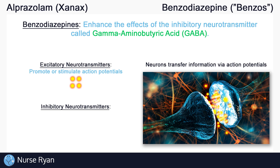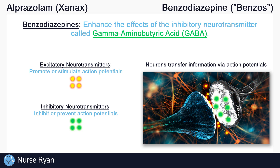We also have inhibitory neurotransmitters, which are the opposite — they are kind of like the downers, the ones that slow or prevent action potentials. The neurotransmitter called GABA is actually the main inhibitory neurotransmitter in the central nervous system. Just to simplify things, let's say that GABA are these little green dots. GABA reduces the excitability of neurons, which slows down the transfer of information.